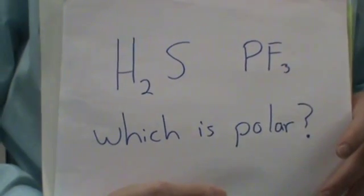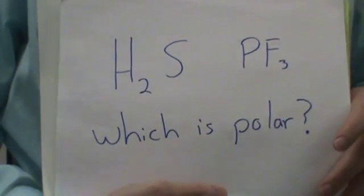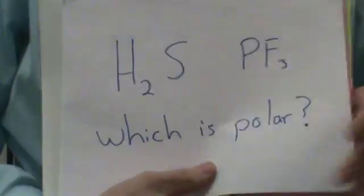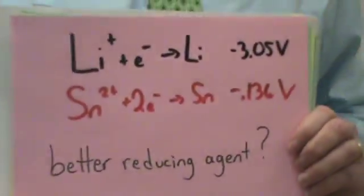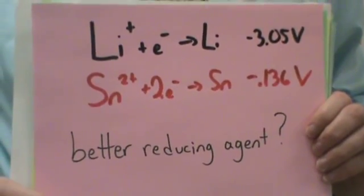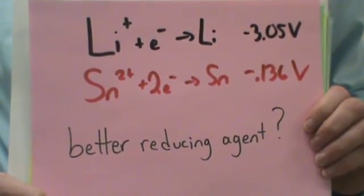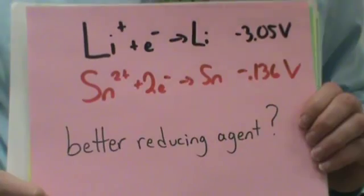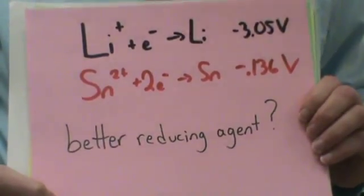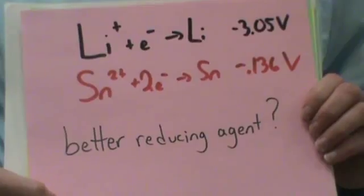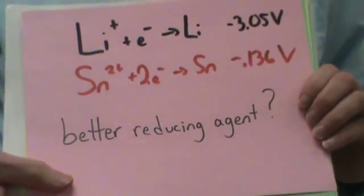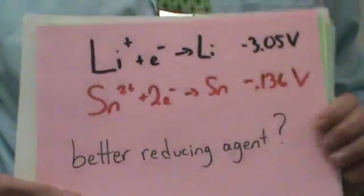Which of those two is polar? Both. Which is the better reducing agent? The best reducing agent would be the thing that's easiest to oxidize, which would be the lithium, so the Li metal.